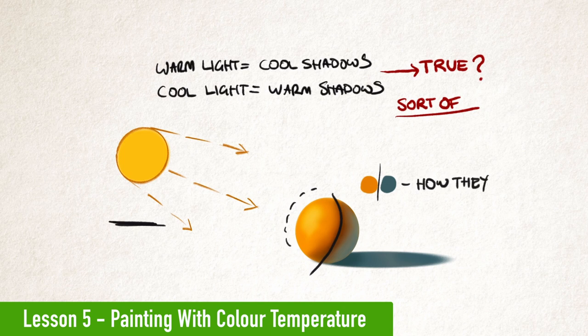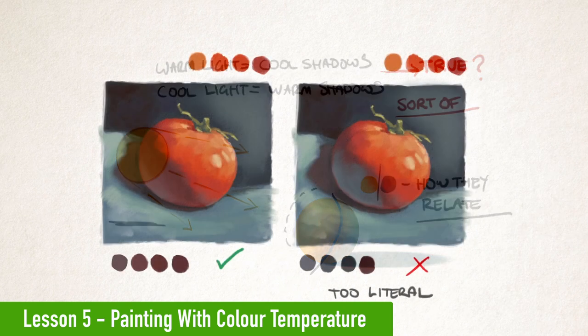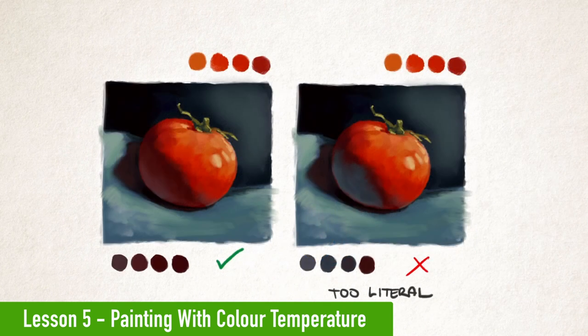We may very well get a shadow side on an object that looks a lot cooler than the warm light hitting it. But that doesn't mean our starting point for our shadows is literally going to be a cooler color.